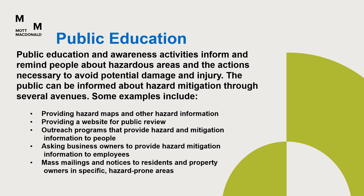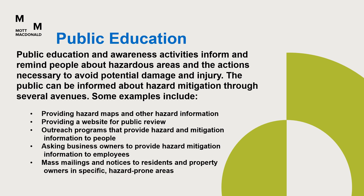Public education and awareness activities inform and remind people about hazard areas and the actions necessary to avoid potential damage and injury. The public can be informed about hazard mitigation through several avenues, including providing hazard maps and other hazard information, providing a website for public review, outreach programs that provide hazard and mitigation information to people, asking business owners to provide hazard mitigation information to employees, and mass mailings and notices to residents and property owners in specific hazard-prone areas.